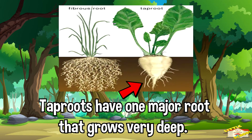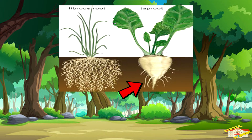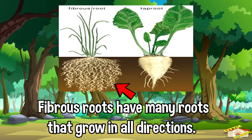Tap roots tend to have one major root that grows very deep, while fibrous roots have many roots that grow in all directions.